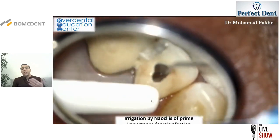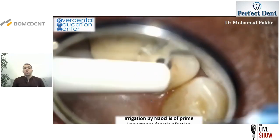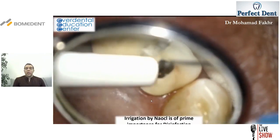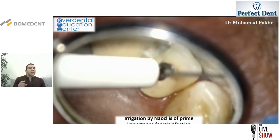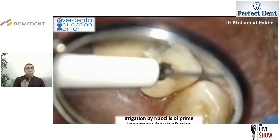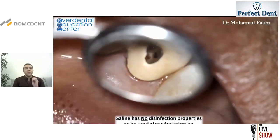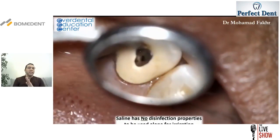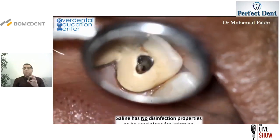When you open the tooth and find pus, you need to disinfect — irrigate with sodium hypochlorite. There was a misconception that sodium hypochlorite should not be used in cases with pus because it causes clumping; however, you need to disinfect the root canal. Sodium hypochlorite disinfects the root canal and dissolves remnant necrotic pulpal tissue. Saline has no antibacterial properties, so you must irrigate with sodium hypochlorite.